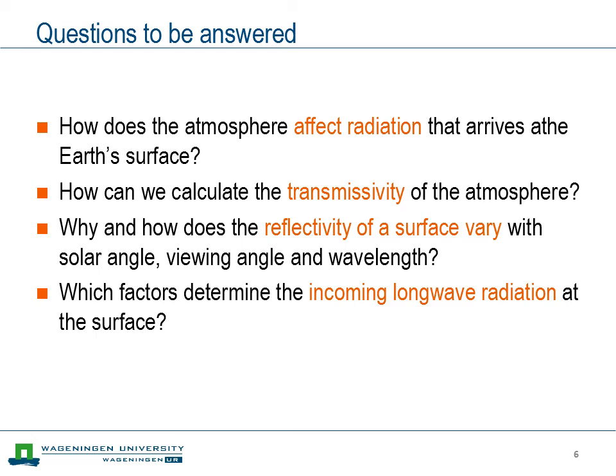The questions to be answered during this lecture include: how the atmosphere affects radiation arriving at the Earth's surface — clouds play a role, but also the different atmospheric constituents. We can quantify how transparent the atmosphere is in terms of transmissivities. We also need to know how much radiation is reflected from the surface, so the albedo plays a role and it's not just a number — it depends on solar angle, viewing angle, and wavelength. Finally, we'll pay attention to incoming and outgoing longwave radiation at the surface.